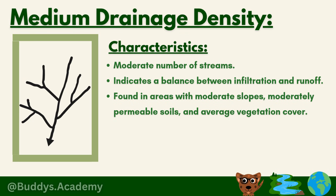Medium drainage density is found in areas with moderate slopes, moderately permeable soils, and average vegetation cover. The land is not going to be too steep or too flat, and the soil will be something like loam because it lets some water in but not too much. Average vegetation cover means there's not going to be too many trees and it's not going to be too bare — examples would be farmlands or grasslands.